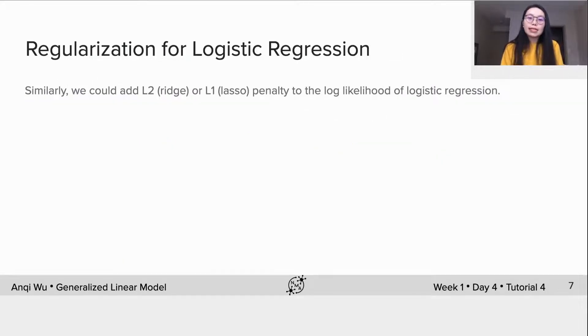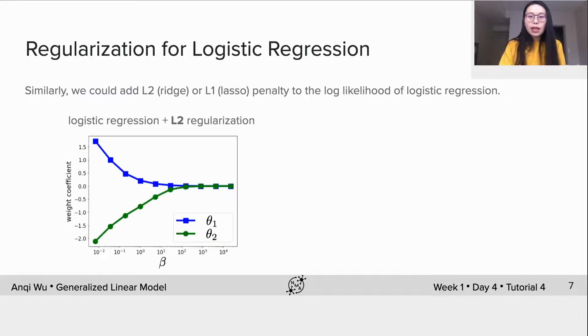Similarly, we can add L2 or L1 penalty to the log likelihood of logistic regression as well. I'm not going through the math for that. Here, I'm showing a data-fitting example for logistic regression plus L2 regularization. We have a binary classification problem. The output Y is 1 or 0, and the input X is two-dimensional, thus we have two weight coefficients, theta1 and theta2, color-coded here.